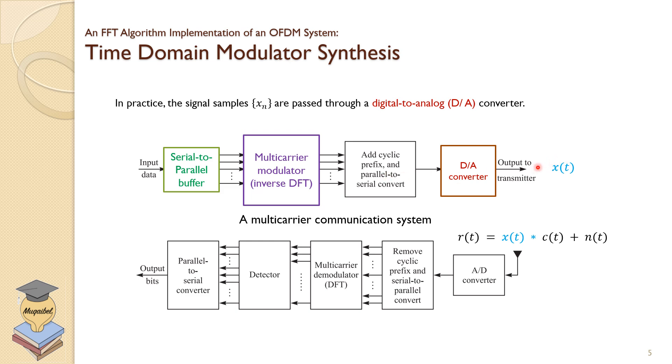This is how we do it. Of course, at the receiver side, the signal will be convolved with the channel c(t), the channel, and noise will be added.